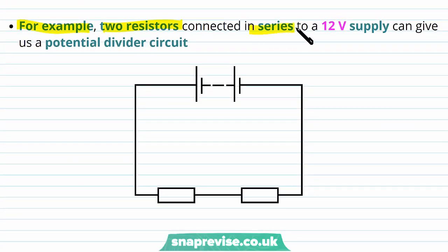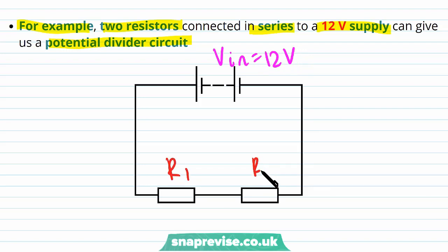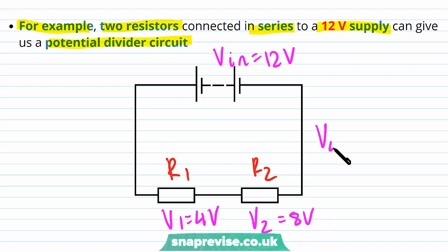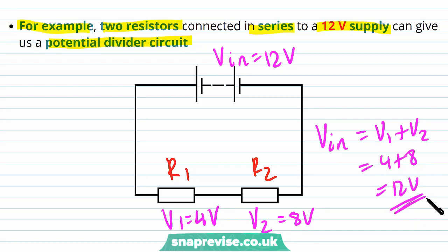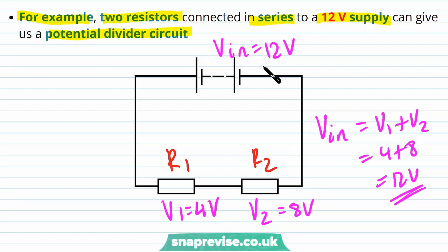For example, two resistors connected in series to a 12 volt supply give us a potential divider circuit. VIN equals 12 volts, and V1 and V2 can each take any value from zero to 12 as long as they add up to 12. So for example V1 might be 4 volts and V2 might be 8 volts. Then V1 plus V2 gives 4 plus 8 which is 12 volts - so that works.